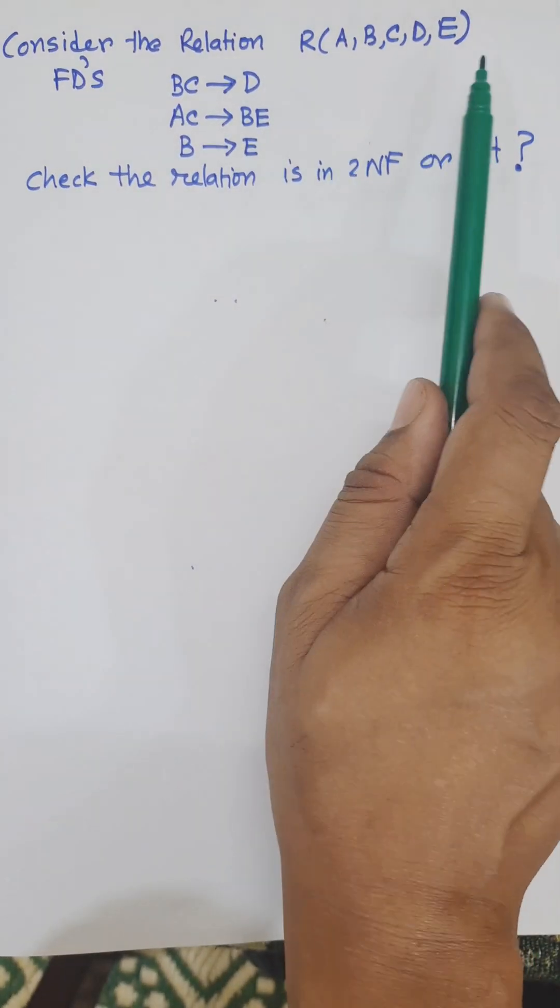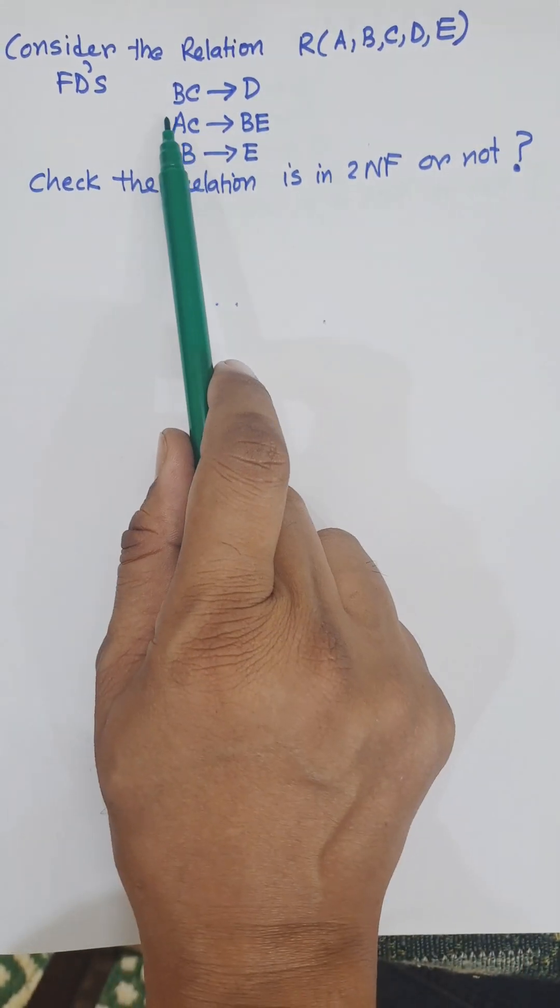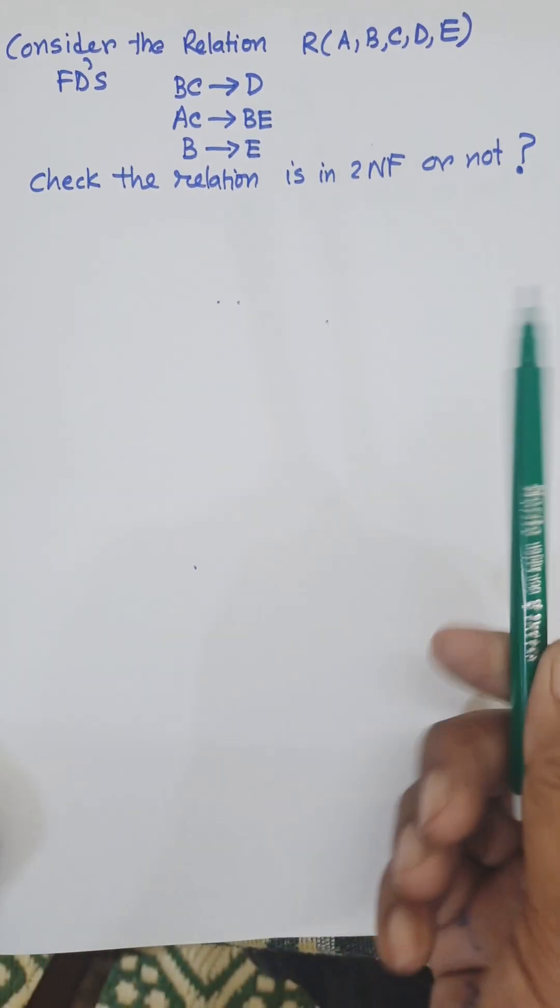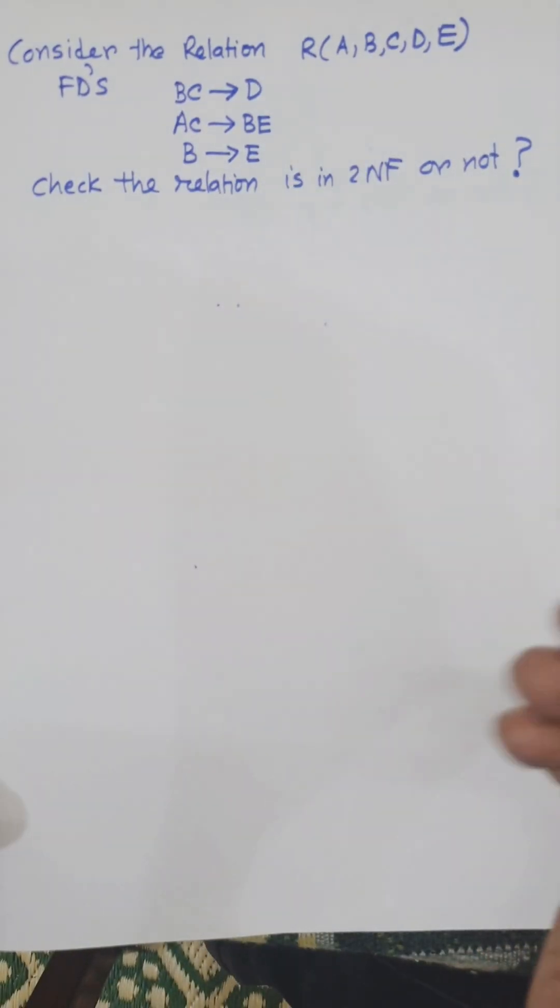Consider the relation R(A, B, C, D, E) with functional dependencies: BC→D, AC→BE, B→E. We need to check whether the relation is in second normal form or not.